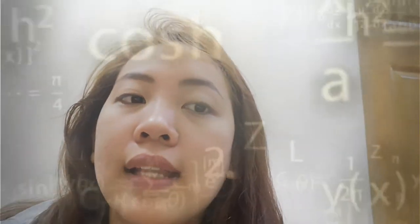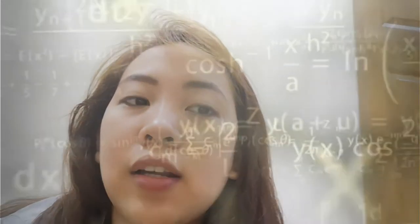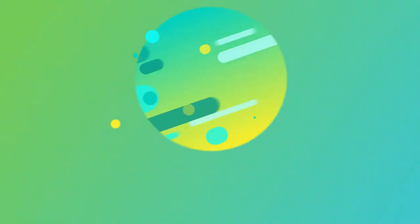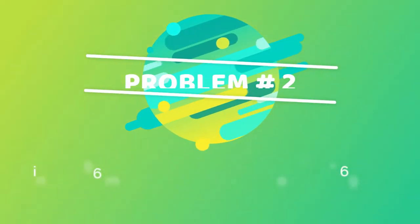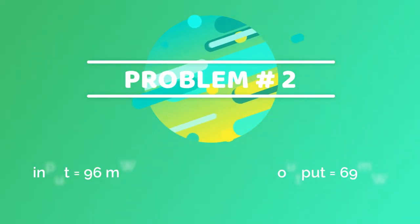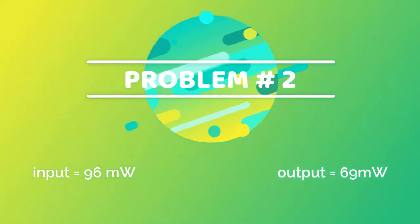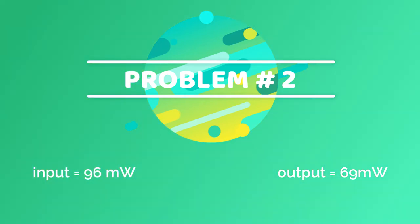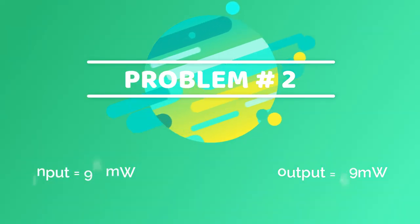Putting that into our calculator gives us negative 3.20, so that would be -3.20 decibels. For a second example, the input is 96 and the output is 69.